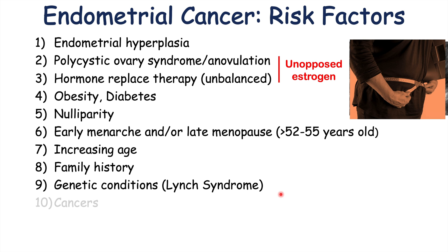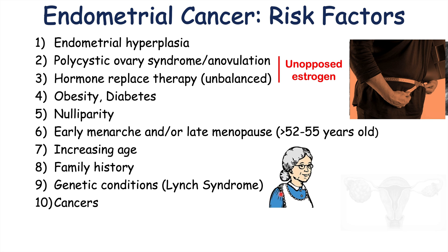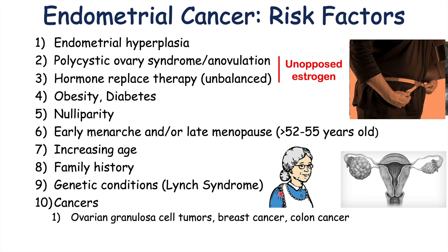Other cancers can also increase the risk of endometrial cancer. If there's a history of certain cancers like ovarian granulosa cell tumors, breast cancer, or colon cancer, these can all increase estrogen levels. Estrogen acts on the endometrium to increase its thickness and cell divisions, essentially increasing the risk of mutations occurring in the endometrium. Tamoxifen use is also another risk factor — tamoxifen is a chemotherapy used to treat breast cancer. It's anti-estrogenic in breast tissue, but pro-estrogenic in the uterus or endometrium, which is why tamoxifen use is a risk factor for endometrial cancer.